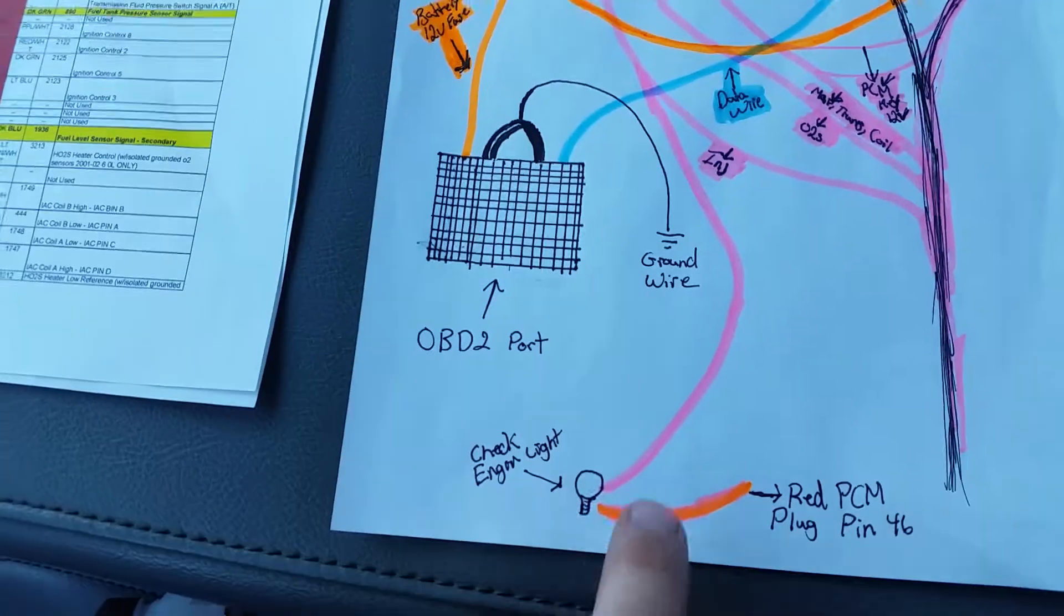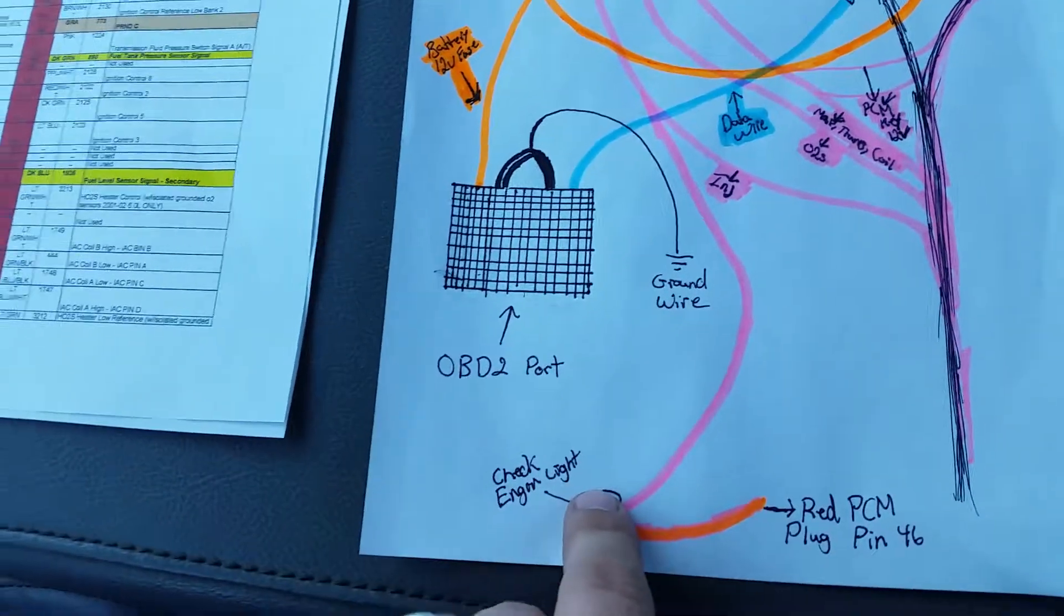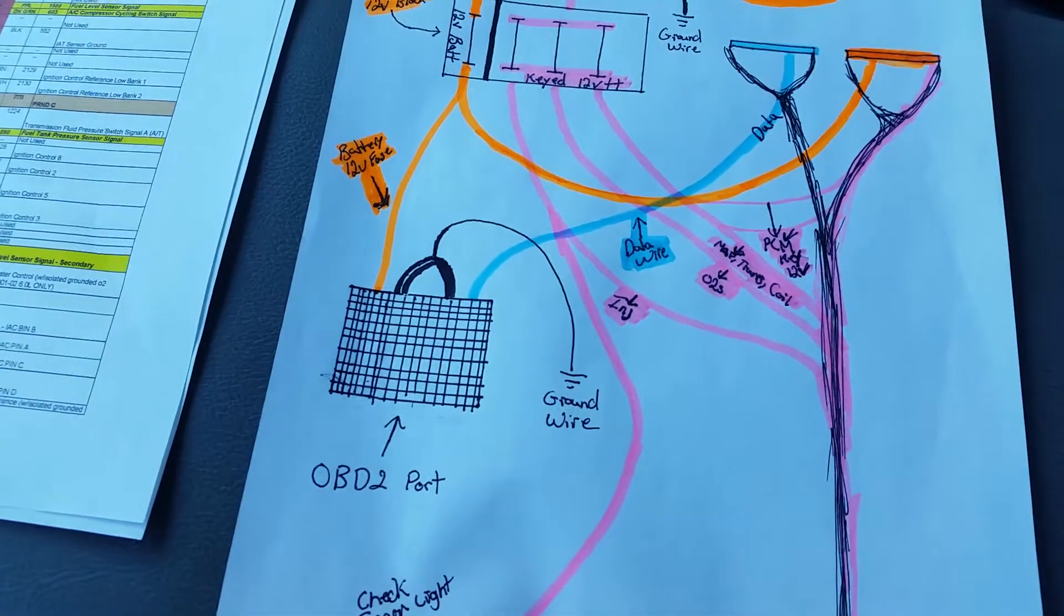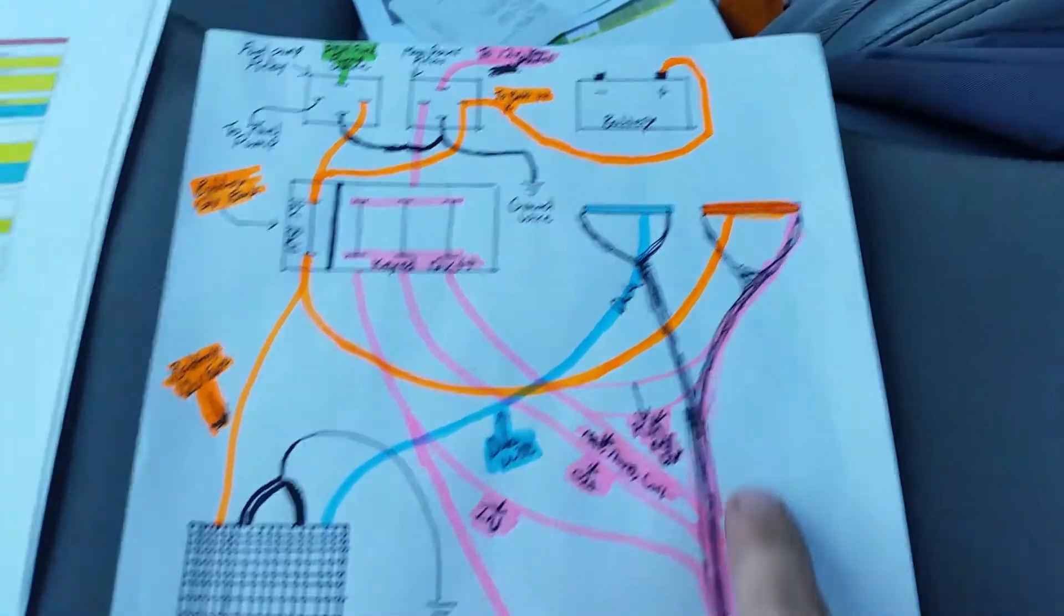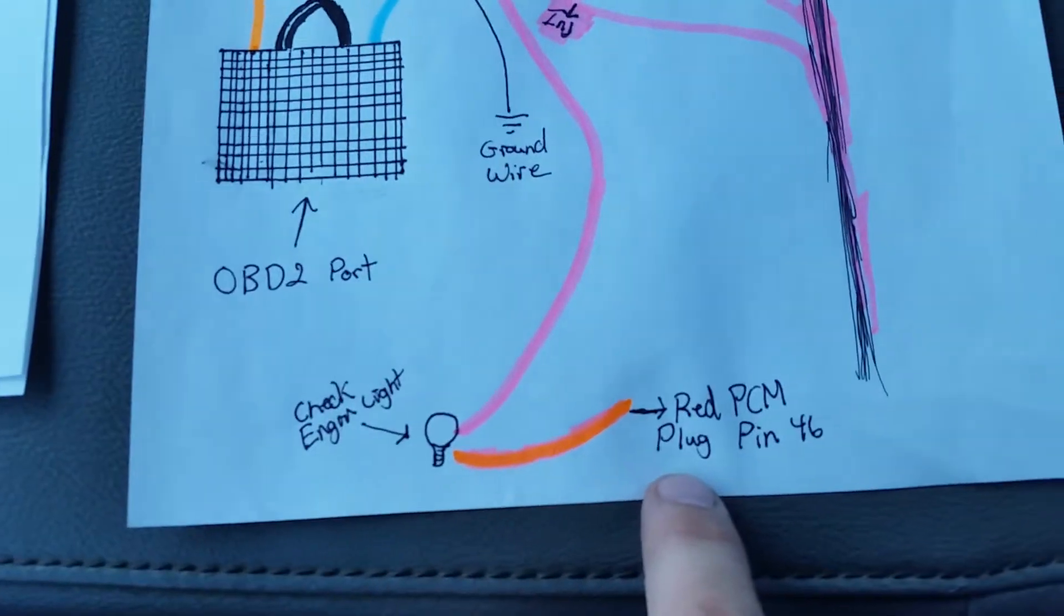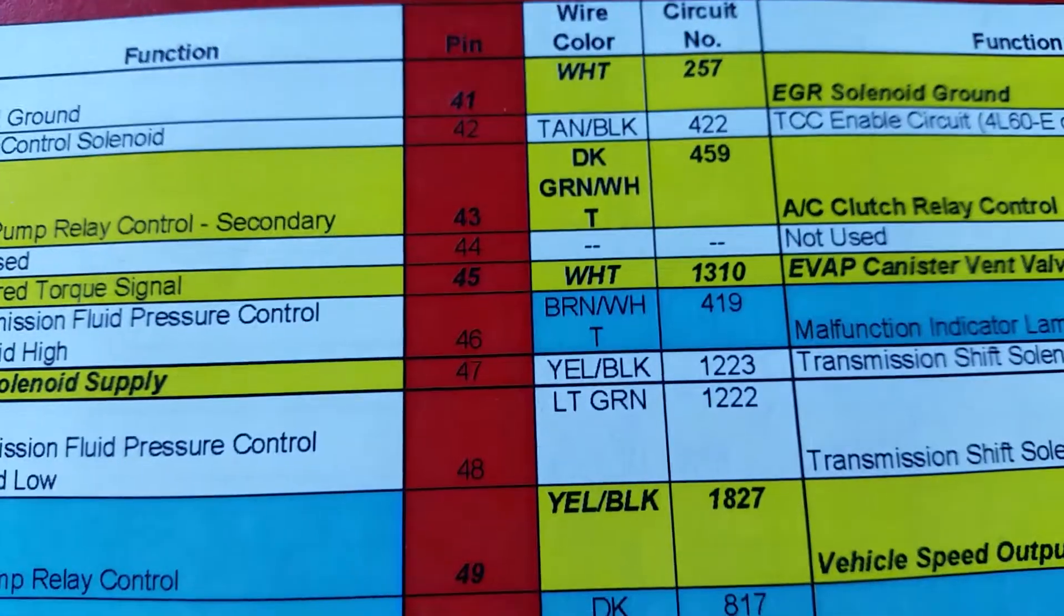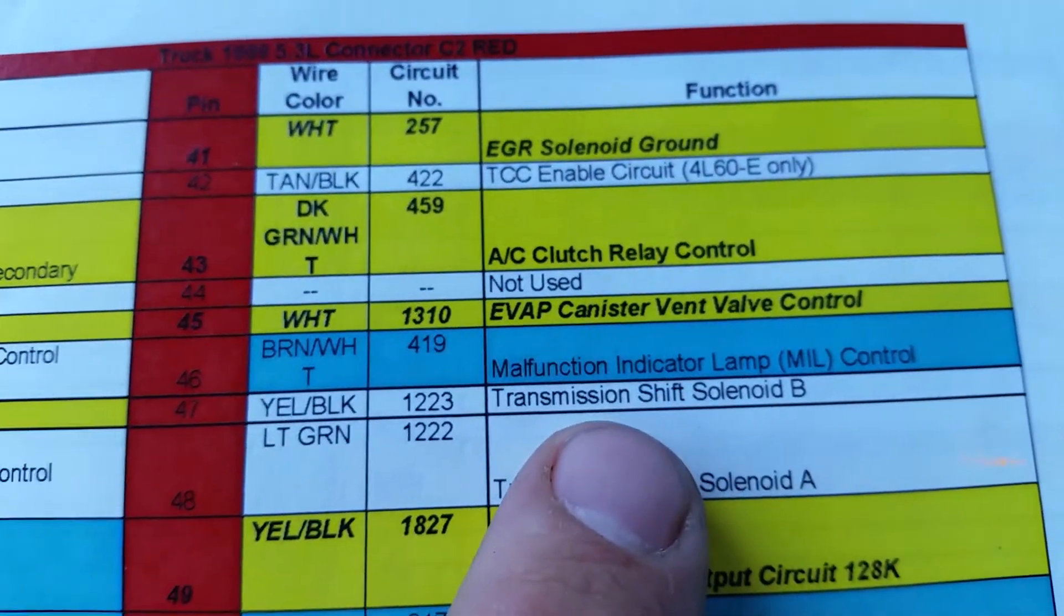You'll also have another wire coming down to the check engine light - that'll be 12-volt so it has power when you turn the key on. If something goes wrong, you'll have another wire from your red plug on your PCM - the check engine wire, which will be pin number 46. If we look over here at pin number 46, it shows malfunction indicator lamp, which is your check engine lamp.